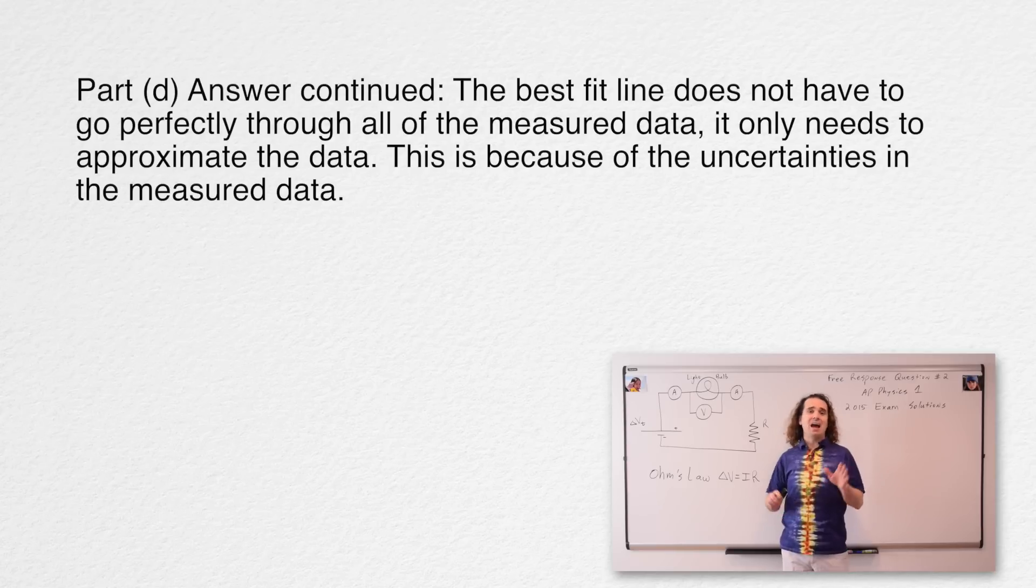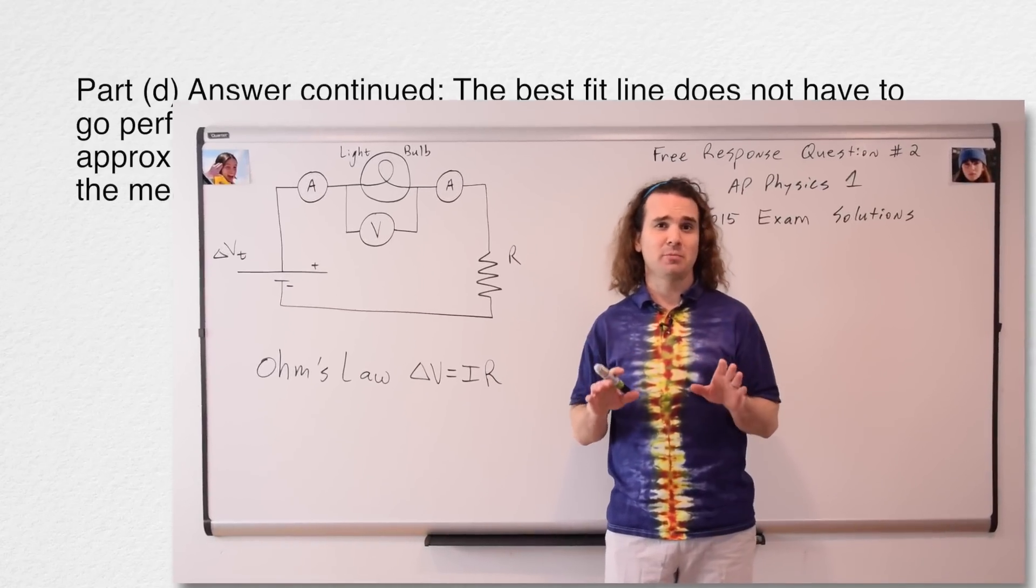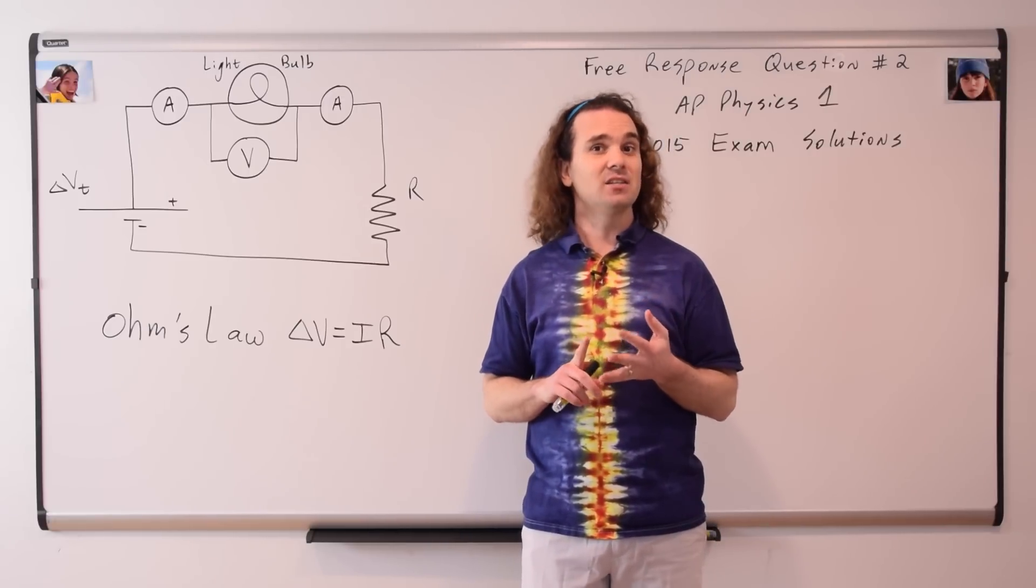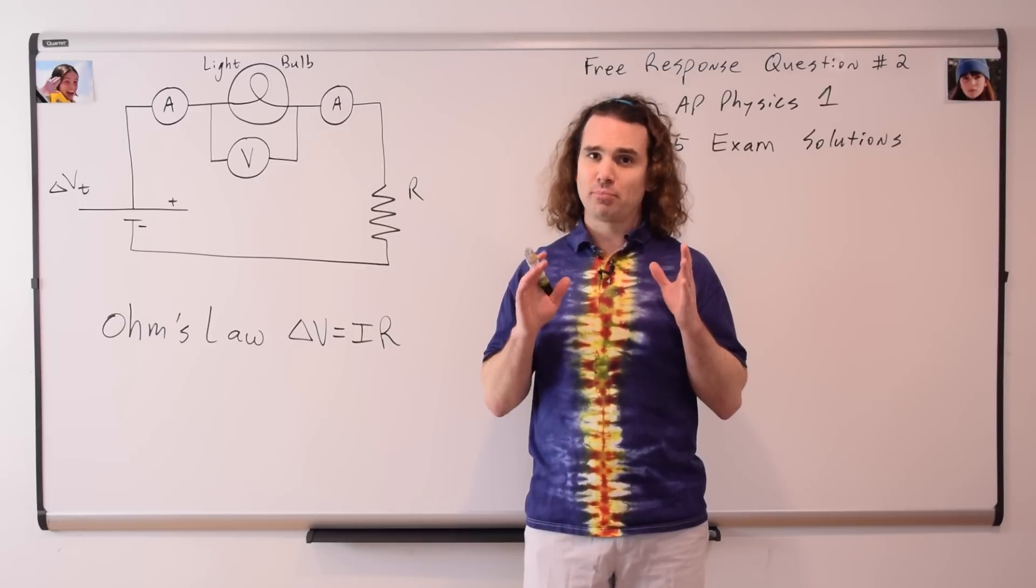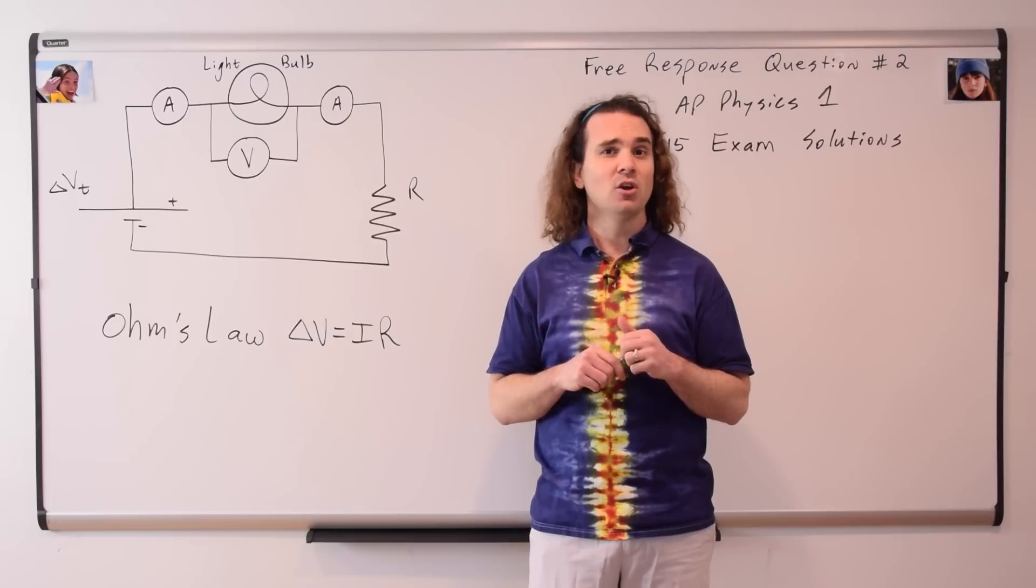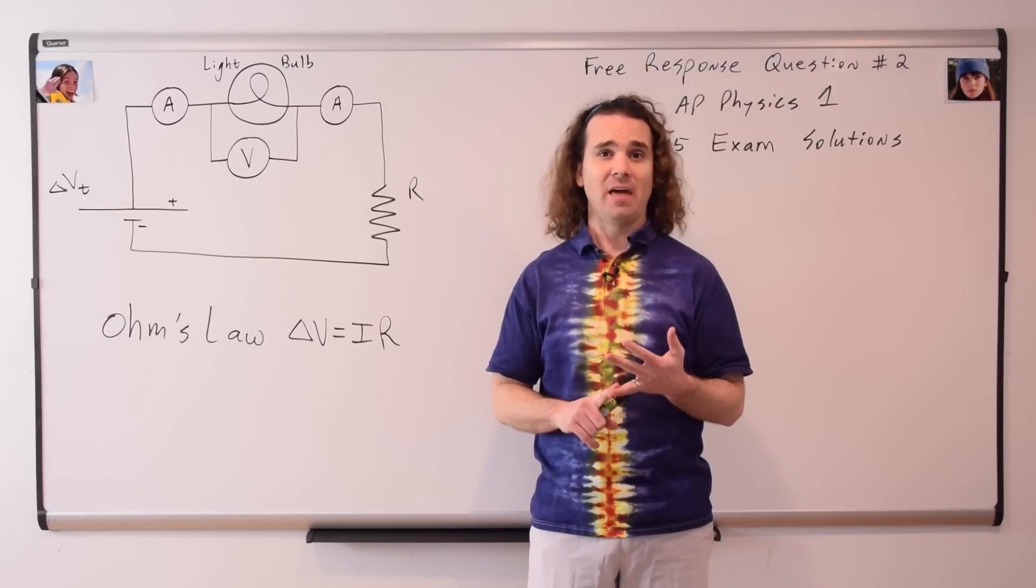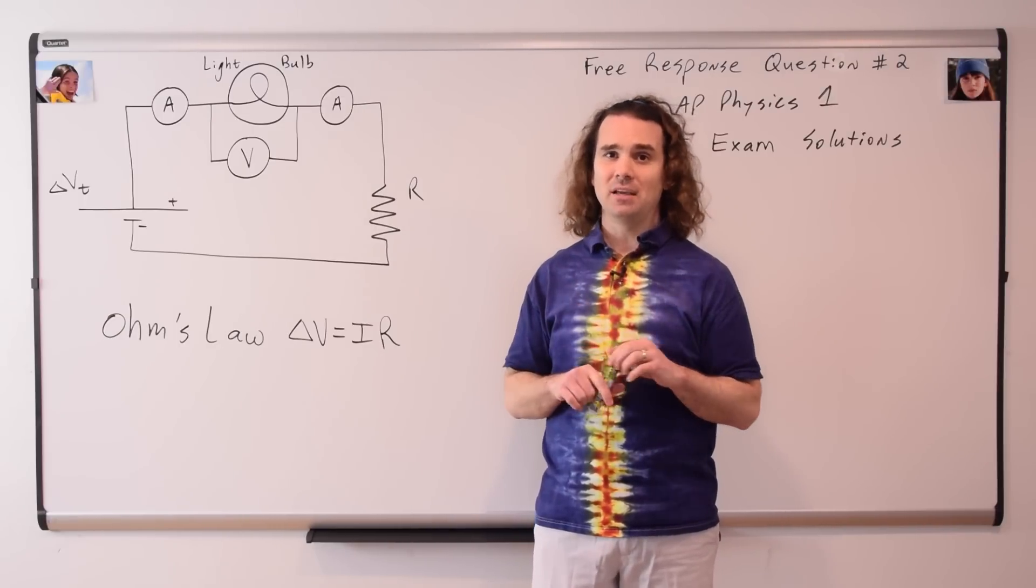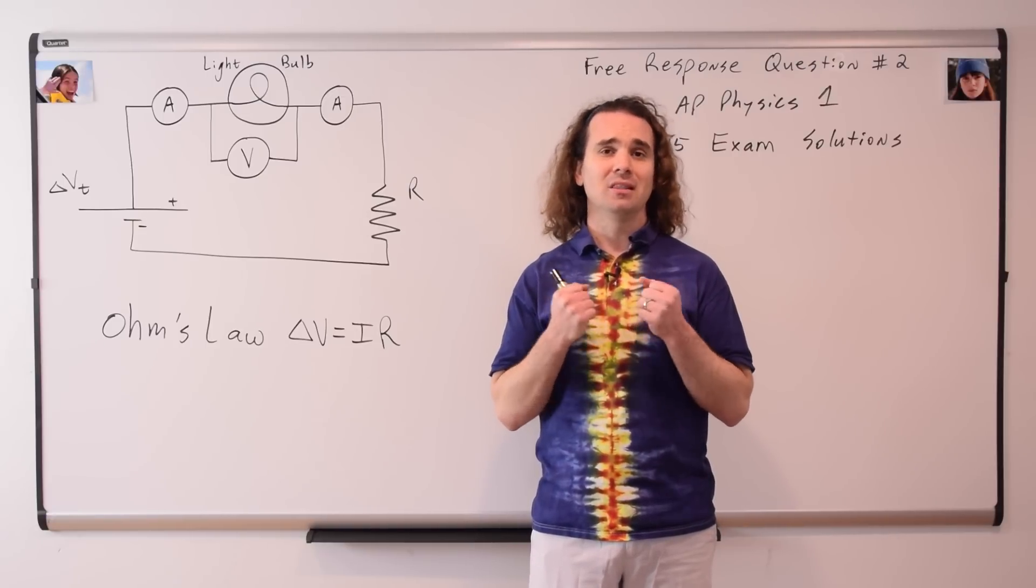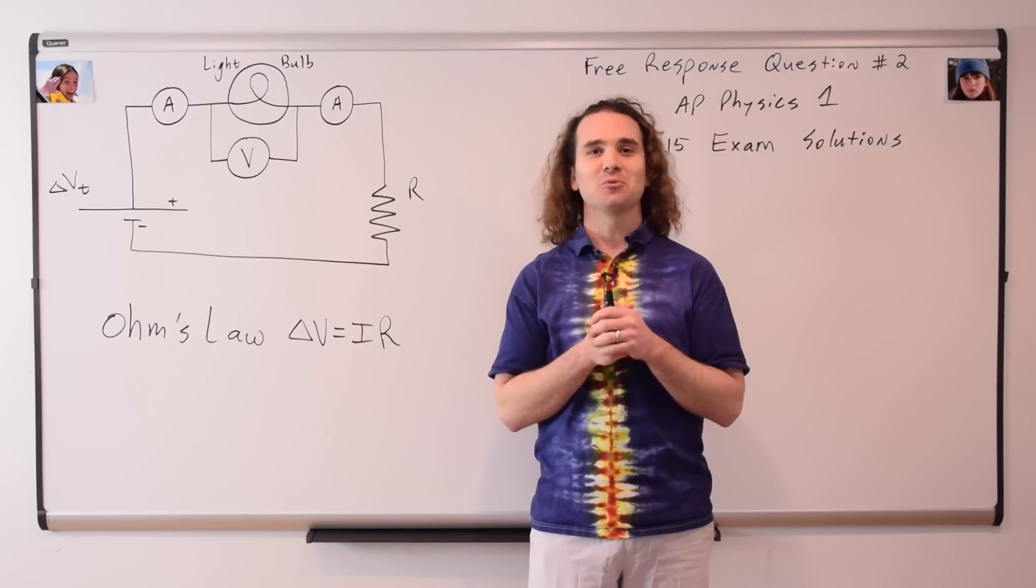Now, notice how the answers to this free response question are completely different than the answers to free response question number one. This problem, the answers were completely short answer and designing an experiment. And you can pretty much count on the fact that every AP Physics 1 exam will have at least one free response question, which is short answer, where you need to design an experiment. In addition to that, notice how this is the second problem in a row that is completely devoid of numbers. So please, I beg you, let go of your numbers dependency. Thank you very much for learning with me today. I enjoyed learning with you.